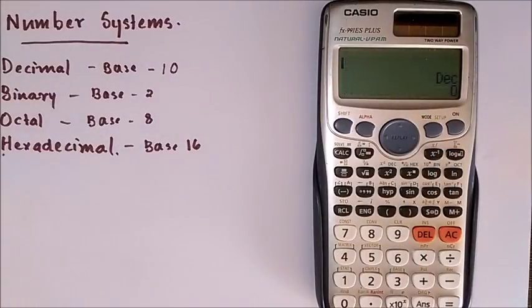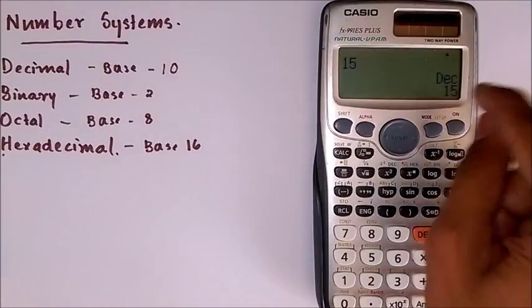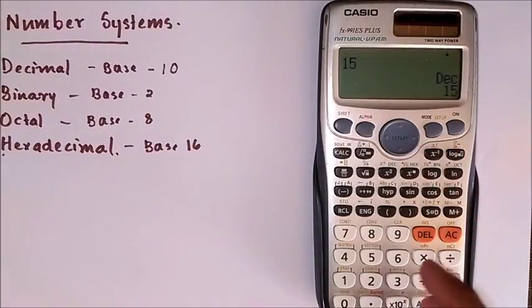Clicking 4 selects base mode and it gives the decimal base as the mode. To convert this to other base numbers, that is binary, octal or hexadecimal, I just simply input a number, let it be 15, and click equal to. Now the calculator is showing the decimal number 15.